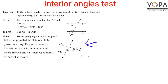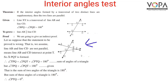Triangle PQT is formed. As we studied in the previous theorem, the sum of the three angles is 180 degrees, so angle TPQ plus angle PQT plus angle PTQ equals 180 degrees. But the sum of just the two interior angles angle BPQ and angle PQD is already 180 degrees, which means angle PTQ would have to be 0 degrees.